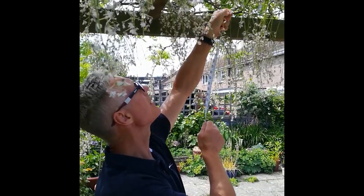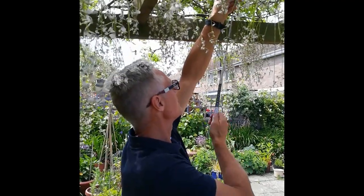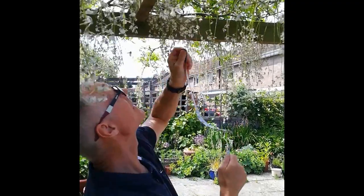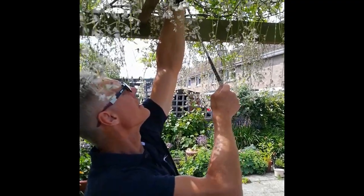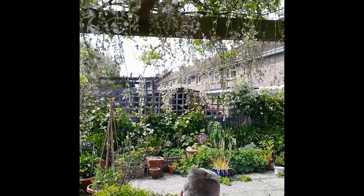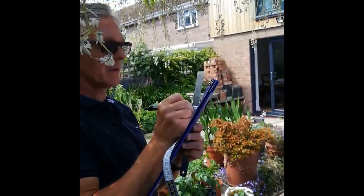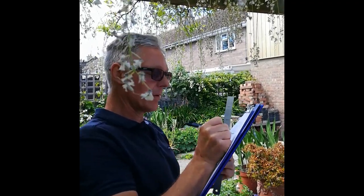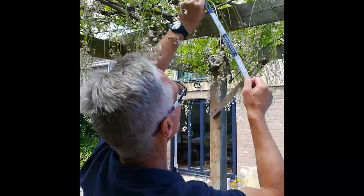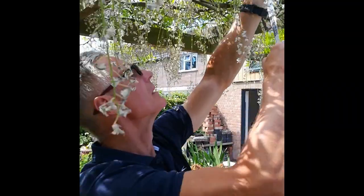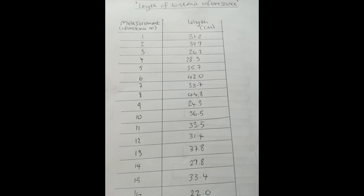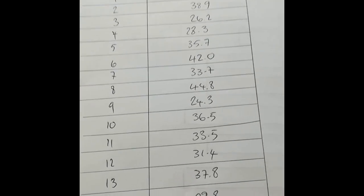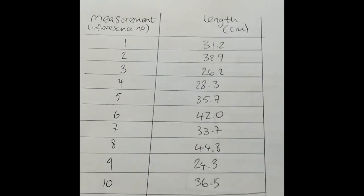So I'm taking measurements — 43.5, 38.9 — writing down my numbers. Now that I've got all my data, all I need to do is make a tally chart of it.